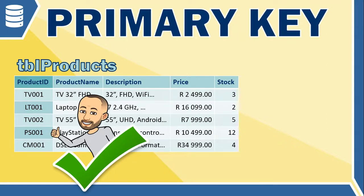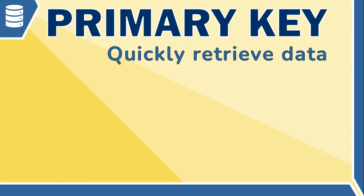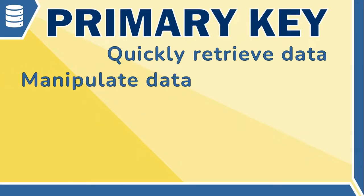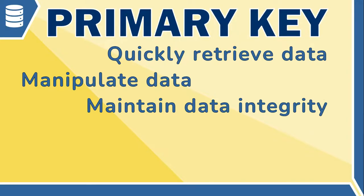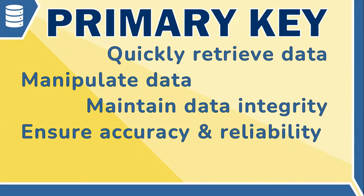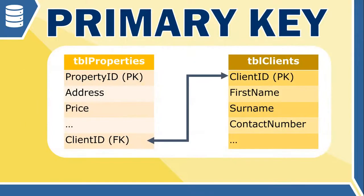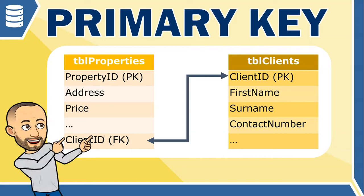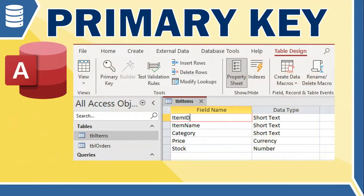Primary keys are used to quickly retrieve and manipulate data in a database, but they also play a crucial role in maintaining data integrity and ensuring the accuracy and reliability of the database. This is particularly important in relational databases, where they are used to connect two or more related tables, making it easier to query or find information across multiple tables and ensuring that the information in the database is accurate and reliable.